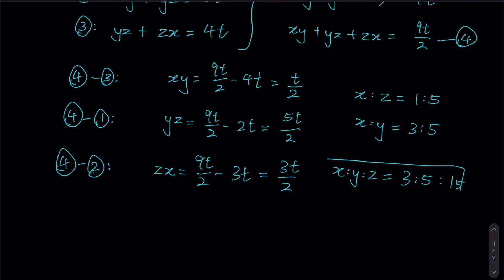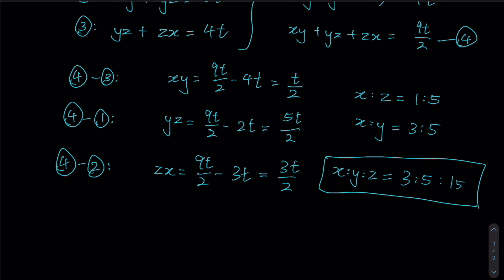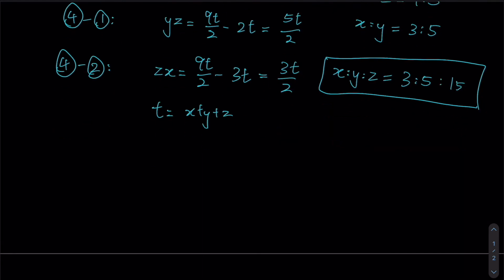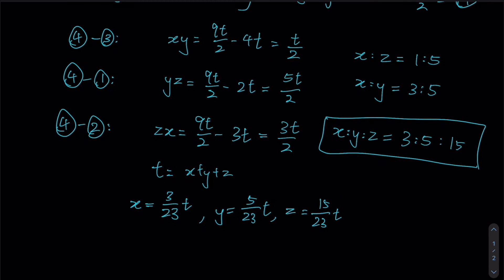Now that we have this ratio, we go back to our substitution t equals x plus y plus z. With the ratio 3 to 5 to 15, the total is 23 units, so x equals 3 over 23 times t, y equals 5 over 23 times t, and z equals 15 over 23 times t.